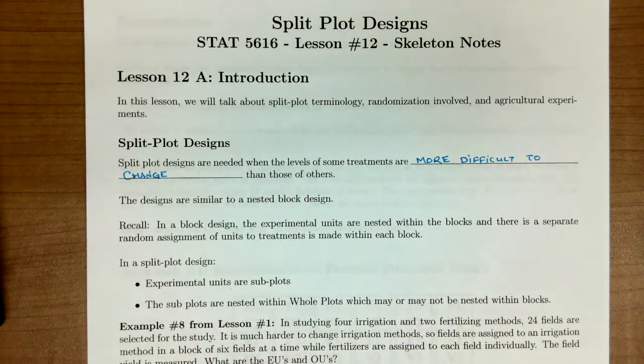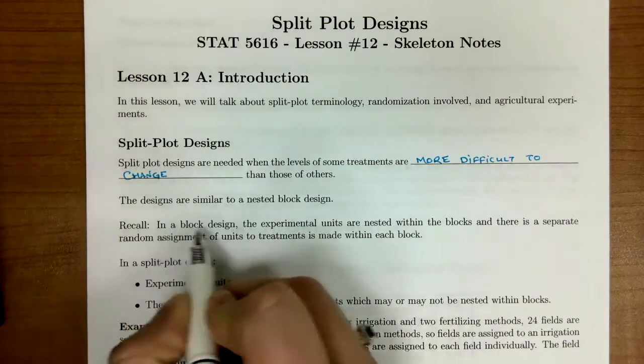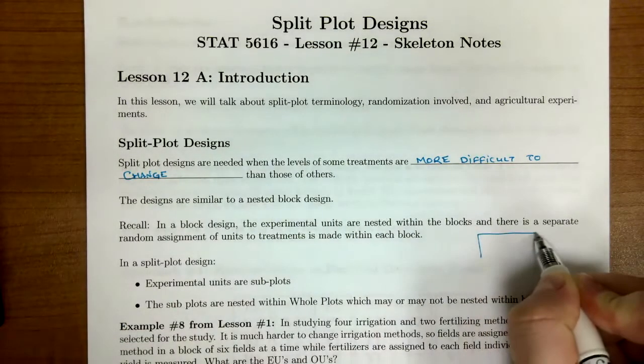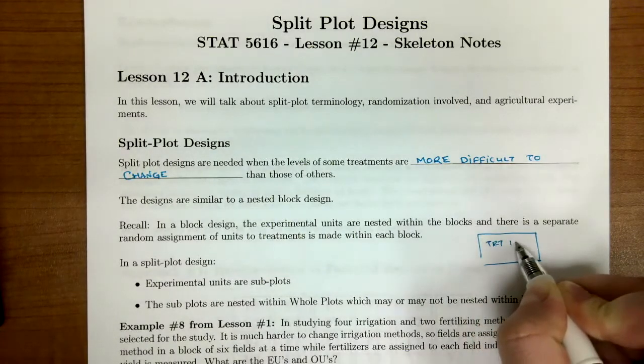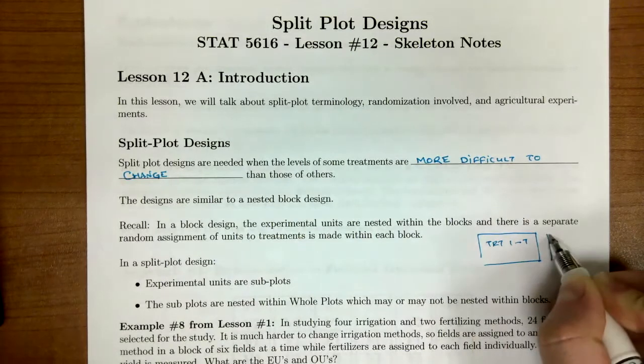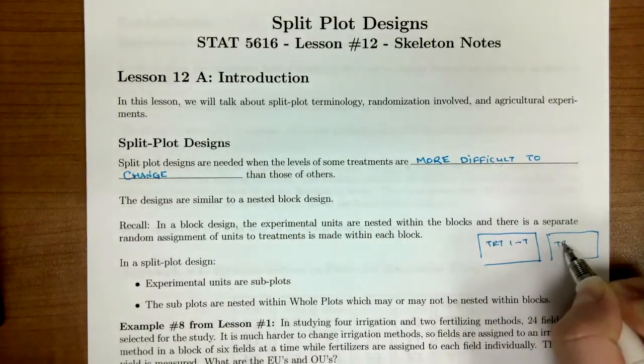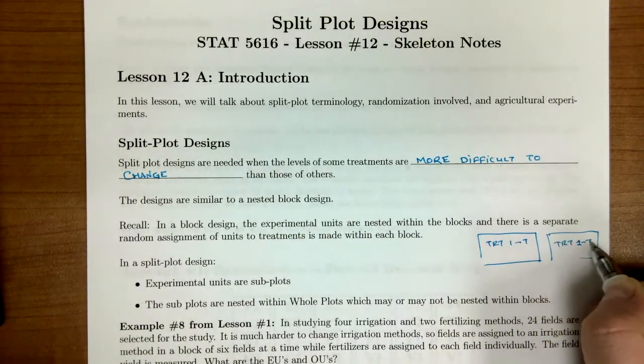This design is similar to a nested block, but in a block design, the experimental units are nested within the blocks. There is a separate random assignment of the units to the treatment which is made in each block. In this case, there's a block, and inside we apply our treatments one through T, and then we would have another block, and we'd assign treatments one through T.